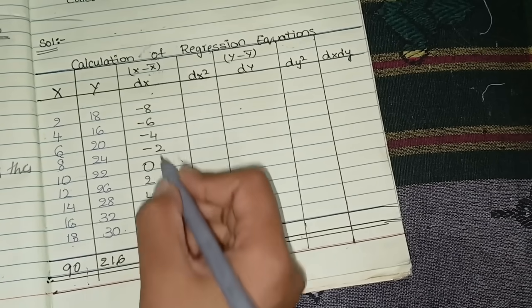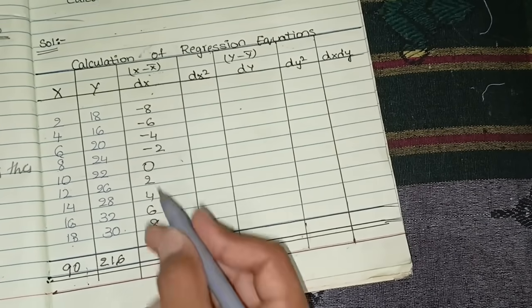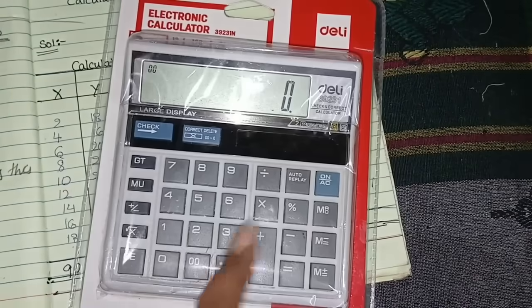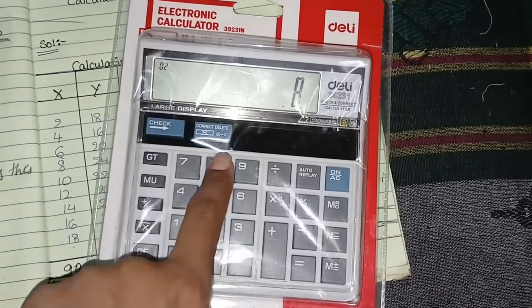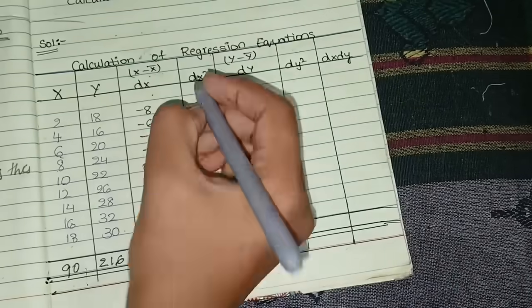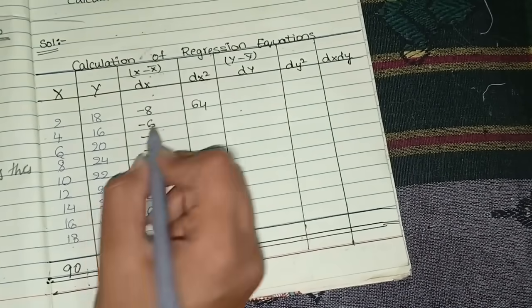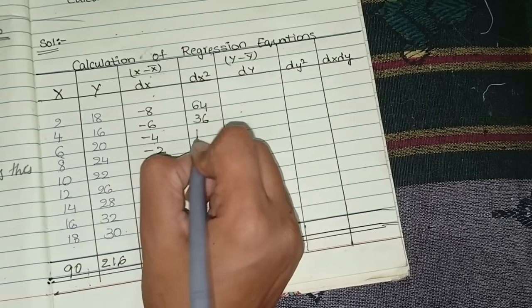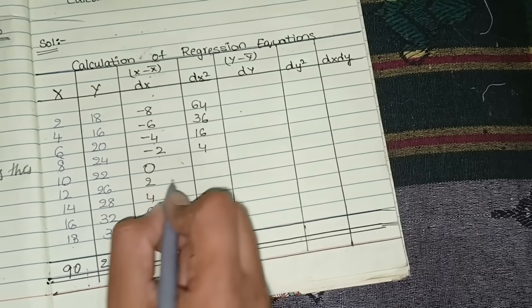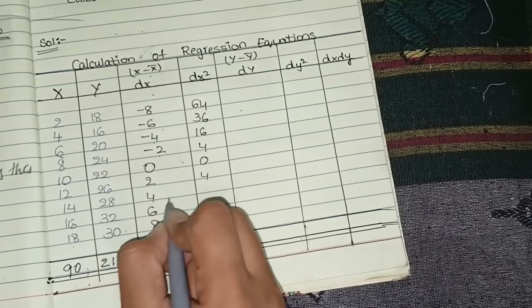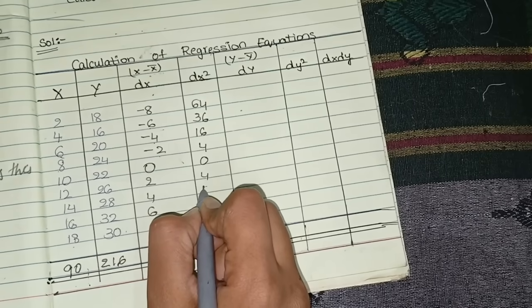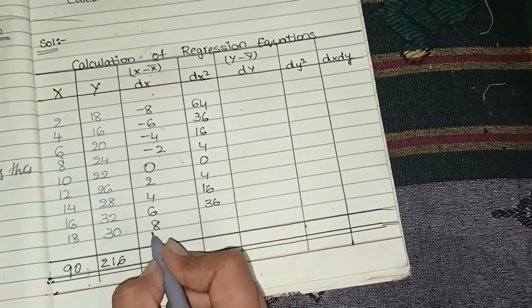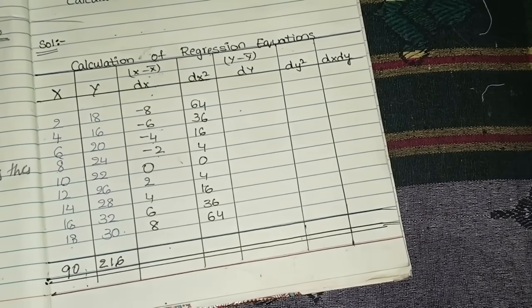Next, calculate dx². In your calculator, square each dx value: 8²=64, 6²=36, 4²=16, 2²=4, 0²=0, 2²=4, 4²=16, 6²=36, 8²=64.